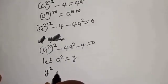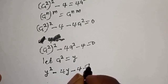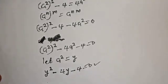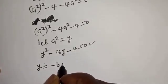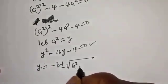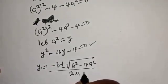Substituting, we have y squared minus 4y minus 4 equals 0. This is a quadratic in y. Applying the quadratic formula: y equals minus b plus or minus square root of b squared minus 4ac, all over 2a.